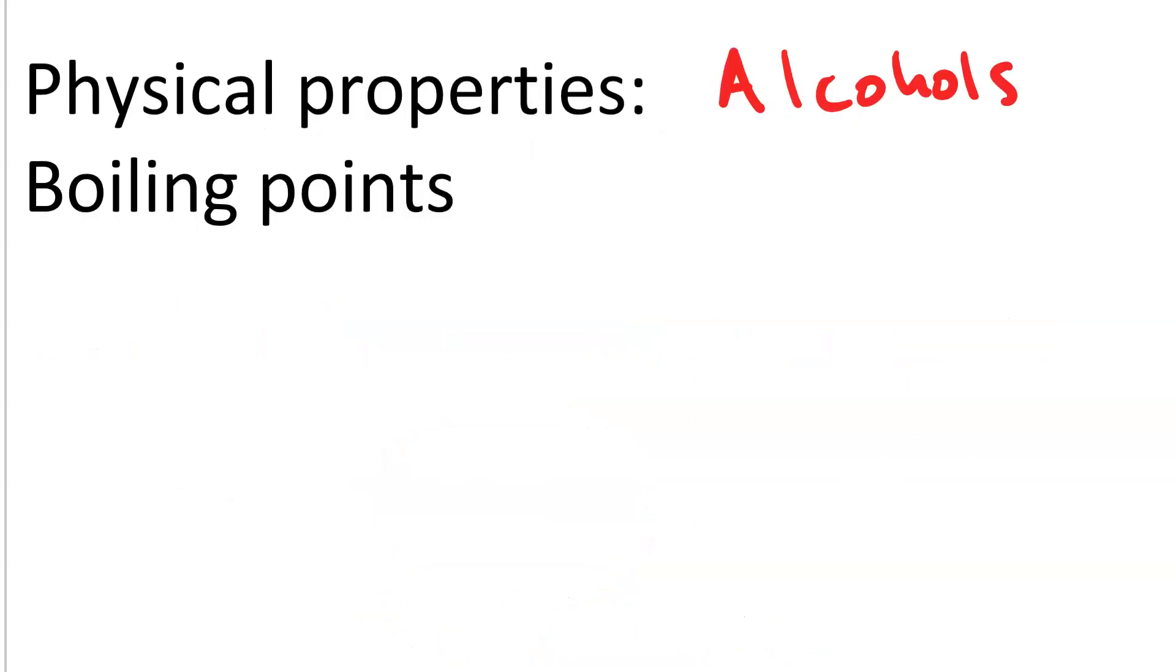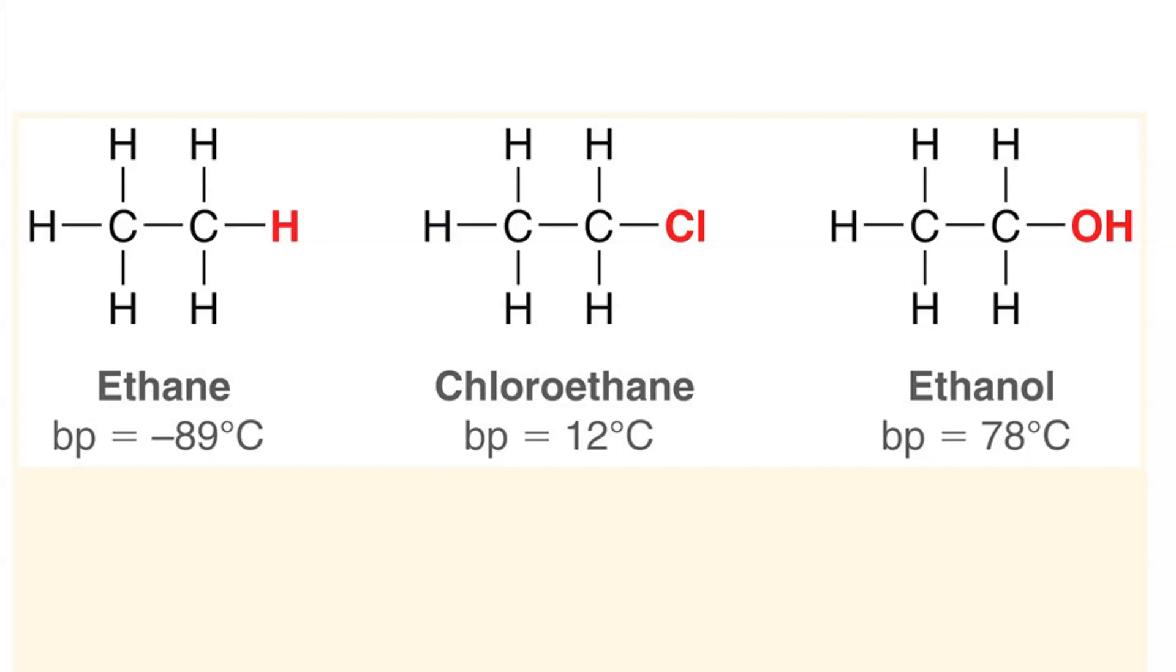Let's look at physical properties of alcohols. Their boiling points are high because of hydrogen bonding. Compare these three different compounds. All have two carbons. Ethane boils at the lowest temperature, negative 89 degrees Celsius. That's because all it has is London dispersion force.